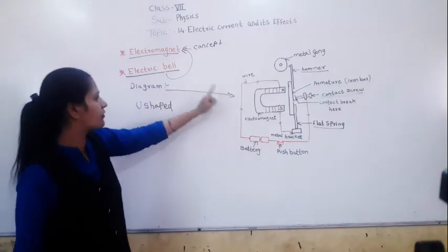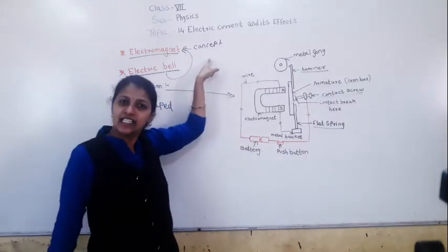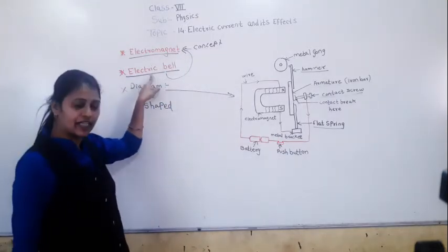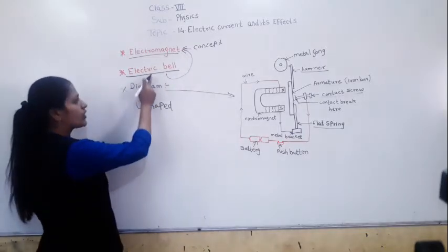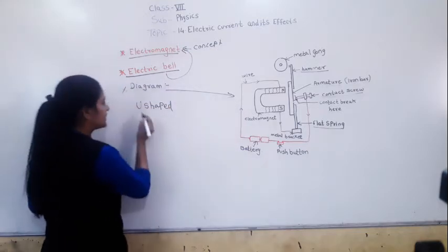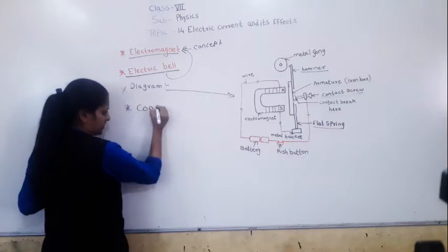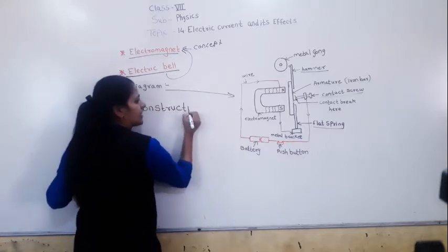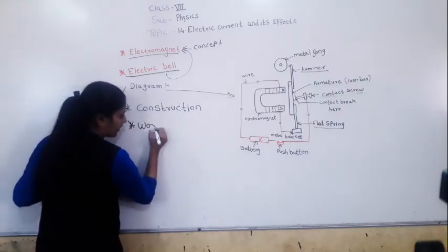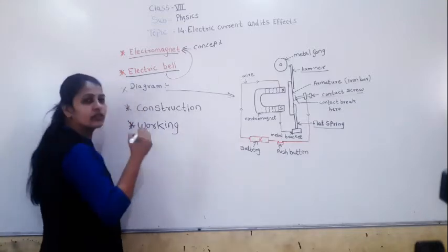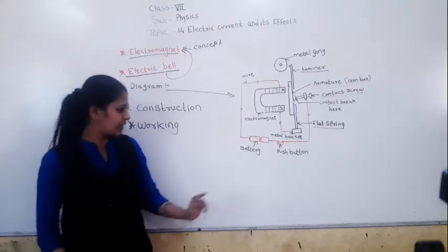So this is the construction of the electric bell. For the exam answer, first write the principle, then draw the diagram, then write the construction, and after construction write the working. Now, how does this electric bell work? The push button is also called a switch. When you press the bell button, that is the push button.